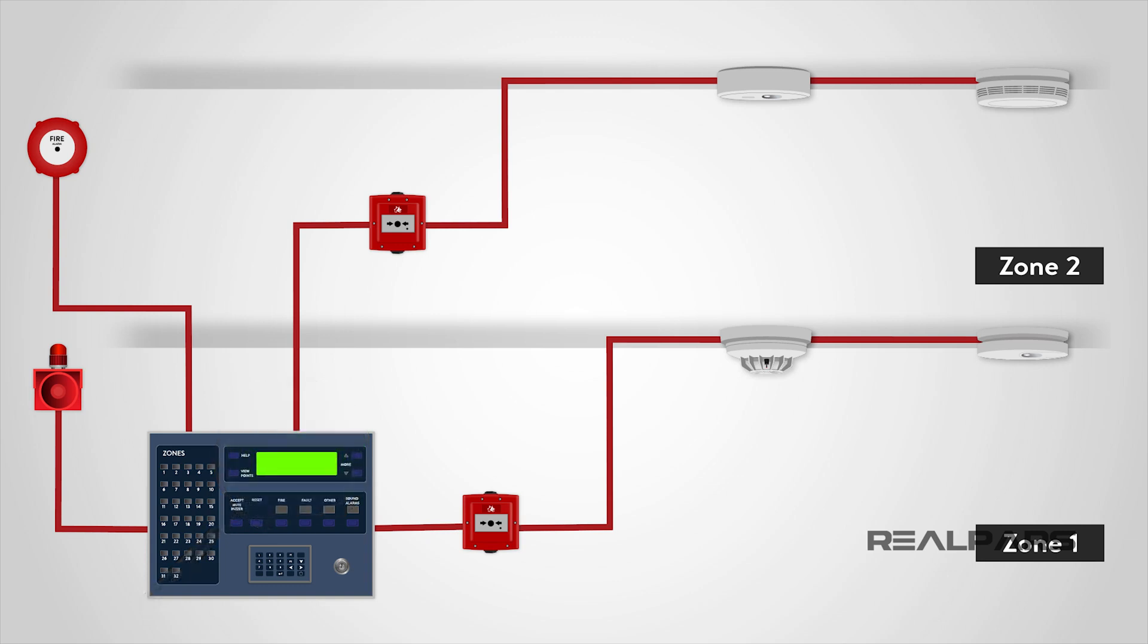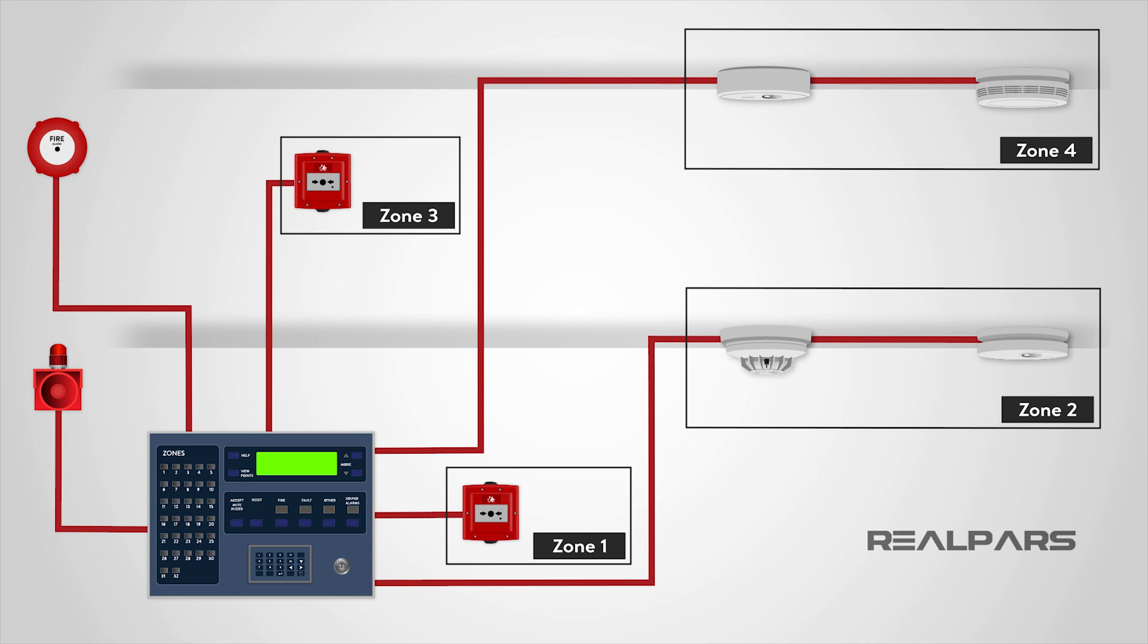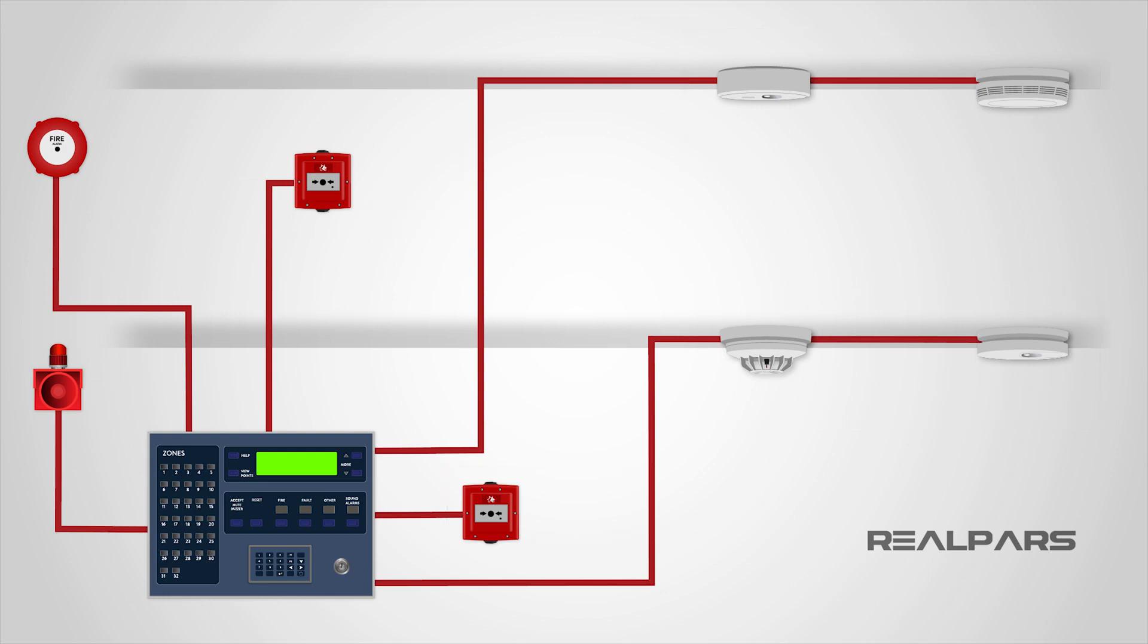It makes sense that the more we can divide a building into zones, the more accurate locating the alarm trigger will be. The control panel is wired to a minimum of two sounder circuits which could contain bells, electronic sounders, or other audible devices. It is these devices which sound the alarm when triggered.